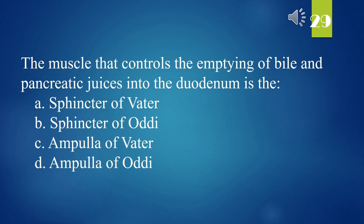The muscle that controls the emptying of bile and pancreatic juices into the duodenum is the: A. Sphincter of Oddi. B. Sphincter of Oddi. C. Ampulla of Vater. D. Ampulla of Vater. The answer is B. Sphincter of Oddi.